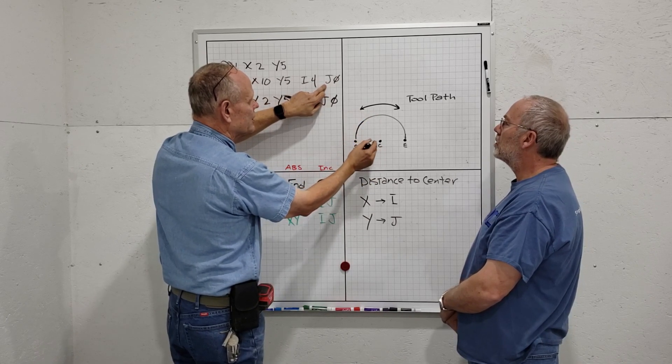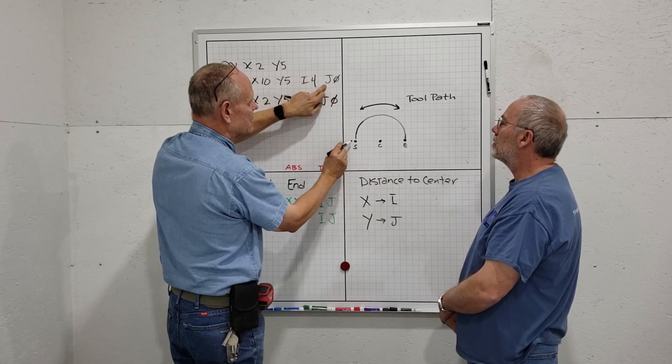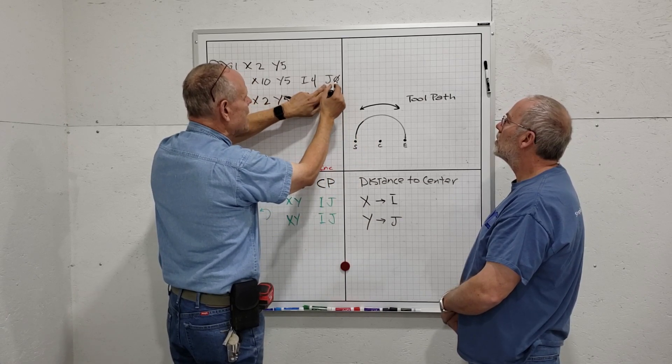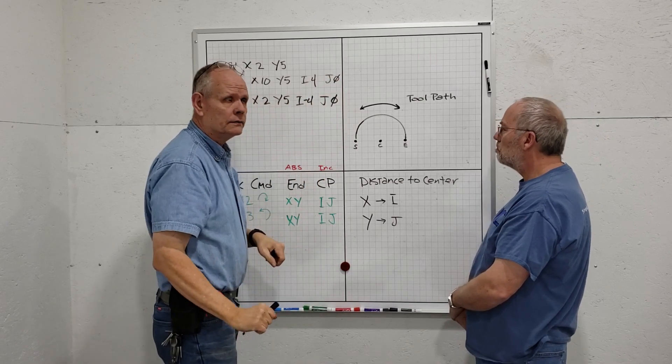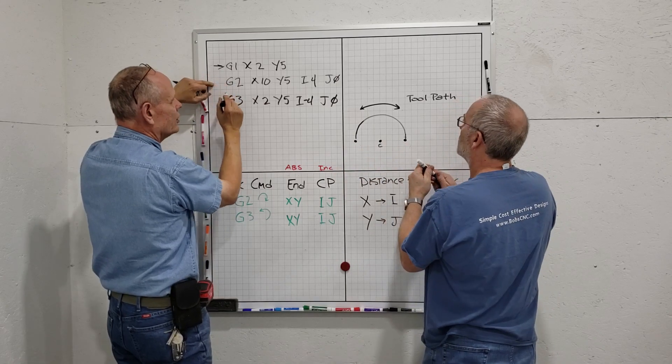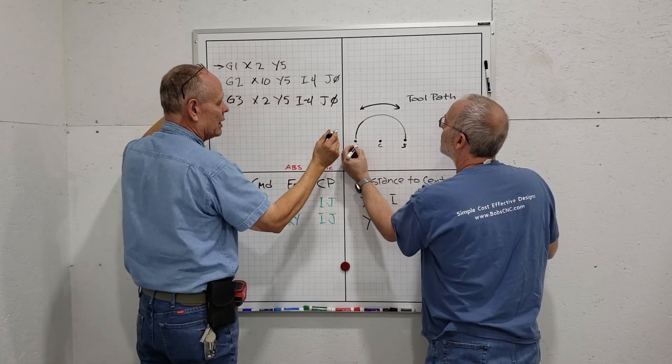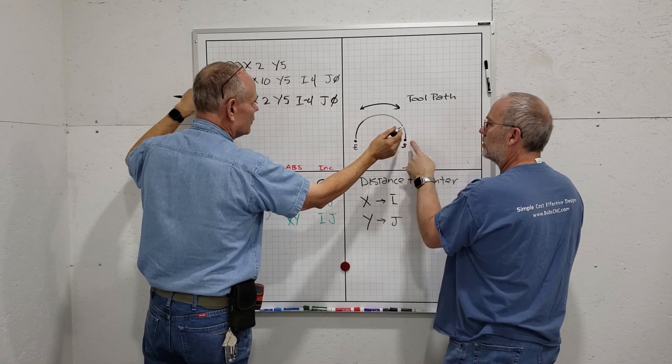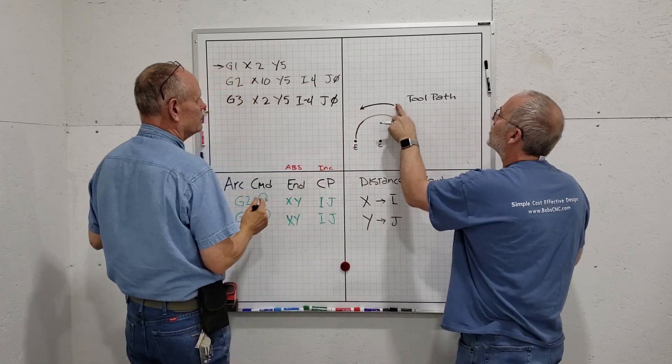If I tell the machine to execute that command, my spindle is going to start cutting here and move over here. Now we're going to go counterclockwise, so we're going to use the G3.